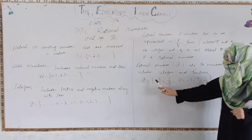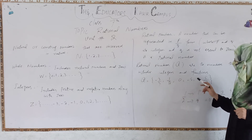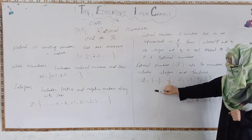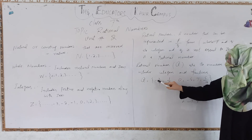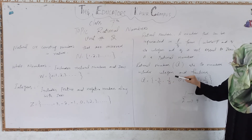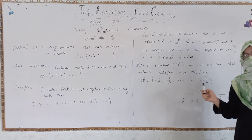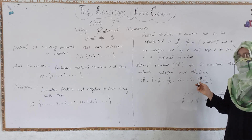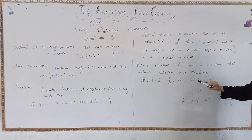Here we can see the set of rational numbers Q is equal to: minus 3 over 7, 1 over 2, 0, minus 5, 7, and 5 over 9. Minus 3 over 7 is a fraction, 1 over 2 is a fraction, 0 is a rational number with no sign, and minus 5 and 7 are integers also included. 5 over 9 is another fraction example.